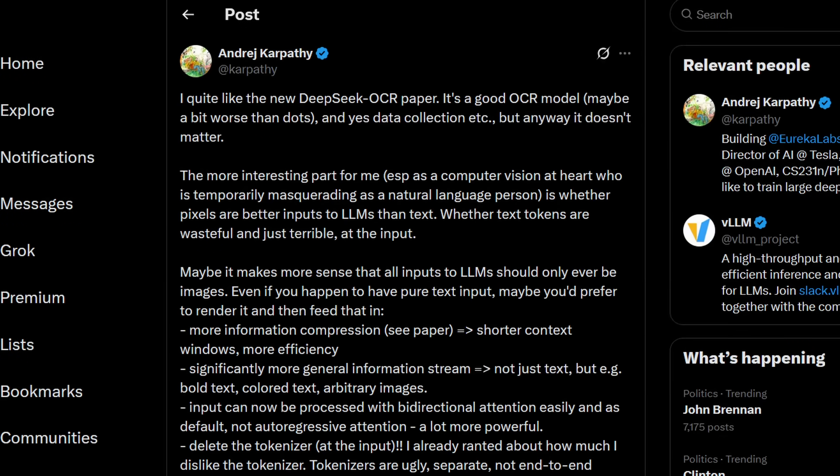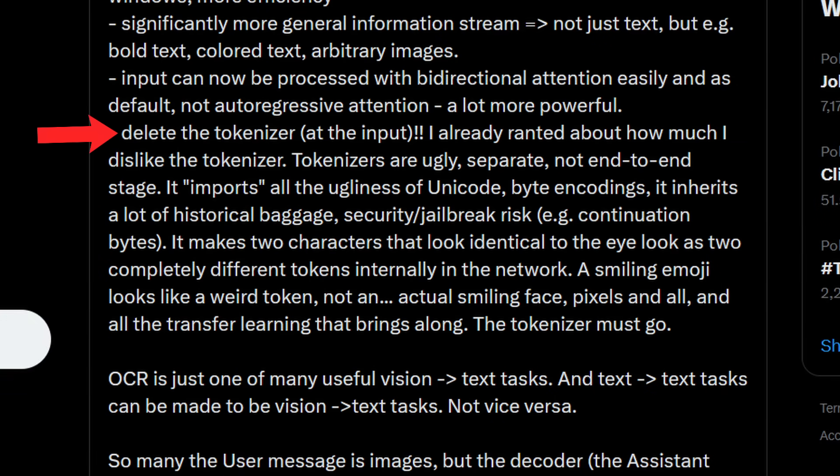And given the shortcoming of text tokens, the pain point behind them is also expressed quite strongly by Andrej Karpathy in a post that said, 'delete the tokenizer at the input. I already ranted about how much I dislike the tokenizer. Tokenizers are ugly, separate, not end-to-end stage. It imports all ugliness of Unicode, Biden coding. It inherits a lot of historical baggage, security jailbreak risks. It makes two characters that look identical to the eye look as two completely different tokens internally in the network. The tokenizer must go.'